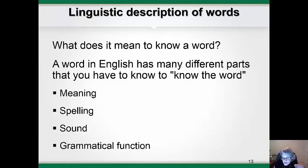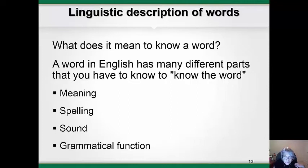The last topic in this lecture is about the linguistic description of words. Let's think about what it means to know a word. What knowledge do you need to have in your head to use that word correctly and to understand it when other people use it? Well, you need to know the meaning of the word and what it refers to. If you are going to write it, you need to know its spelling. You also need to know what sounds or phonemes the word is composed of so that you can recognize it when you hear it or pronounce it correctly. And you also have to know its grammatical function so that you can use it correctly in a sentence. All of this knowledge makes up part of what linguists call your linguistic competence, or your knowledge about your language.